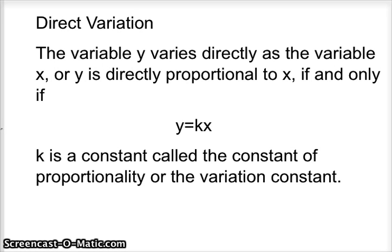Direct variation is basically translating a sentence into an equation. The variable y varies directly as the variable x, or y is directly proportional to x, if and only if y equals kx. k is a constant called the constant of proportionality or the variation constant.